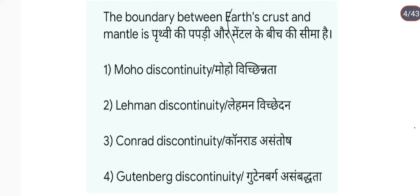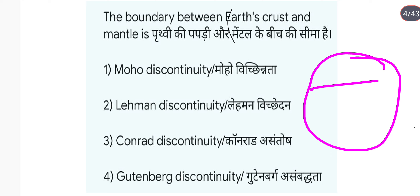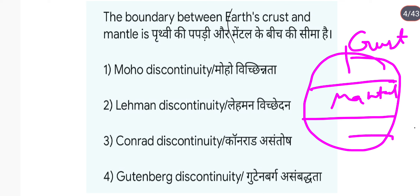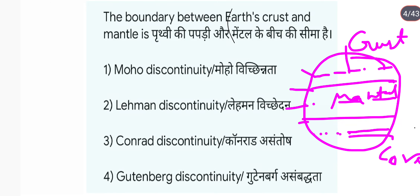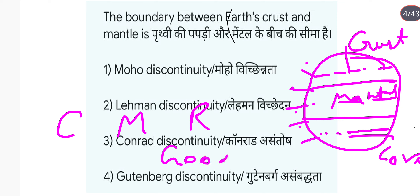Earth crust और mantle के बीच में जो boundary है उसको क्या कहा जाता है? इसके लिए एक discontinuity होती है crust में, mantle में, और core में भी discontinuity होती है। इसको हम याद कर सकते हैं — कुल 5 discontinuities हैं। इसको याद कर सकते हैं CMR Good Leader।